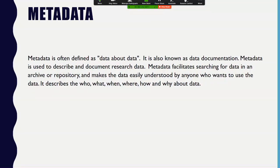Metadata — data about data — is part of the described component of the data lifecycle. There are three different types: descriptive metadata supports discovery and identification; structural metadata describes how the resource is organized; and administrative metadata helps in managing the resource by describing technical aspects, rights management, and preservation information. There are lots of different metadata schemes, but you want to make sure you have clean, thorough metadata to enhance discoverability. In your descriptive metadata, you want good keywords so other people can find it easily.